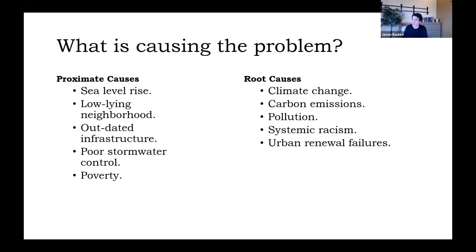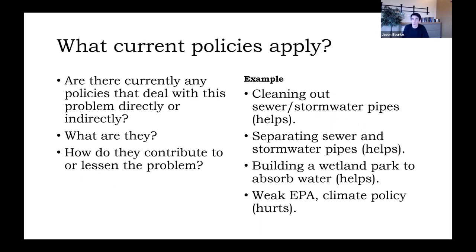Root causes include climate change, which is leading to sea level rise and therefore flooding in Southbridge, along with carbon emissions and pollution. And some things may not be quite as obviously connected — systemic racism is connected directly to poverty and to outdated infrastructure. We can also link this to the failures of urban renewal from the 1950s and 60s. Southbridge was largely built as an urban renewal site — much of the neighborhood was built as a housing project in a place that wasn't considered valuable because it's low-lying and marshy. These places were basically used to contain poverty away from city centers.